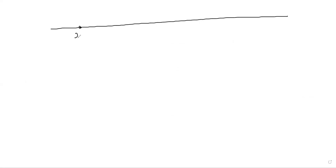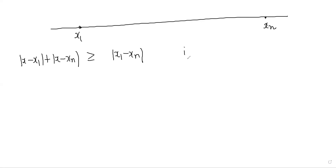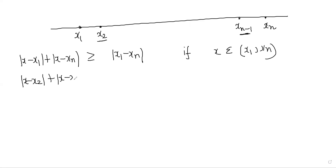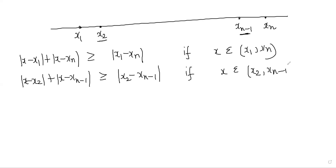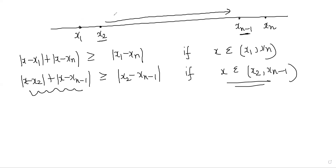Applying the same principle to the original problem: |x - x1| + |x - xn| ≥ |x1 - xn| when x lies between x1 and xn. Now for the next pair, x2 and x(n-1): if we want to minimize |x - x2| + |x - x(n-1)|, we follow the same principle and get a value ≥ |x2 - x(n-1)|, with x lying between x2 and x(n-1) — a smaller interval inside the first one.